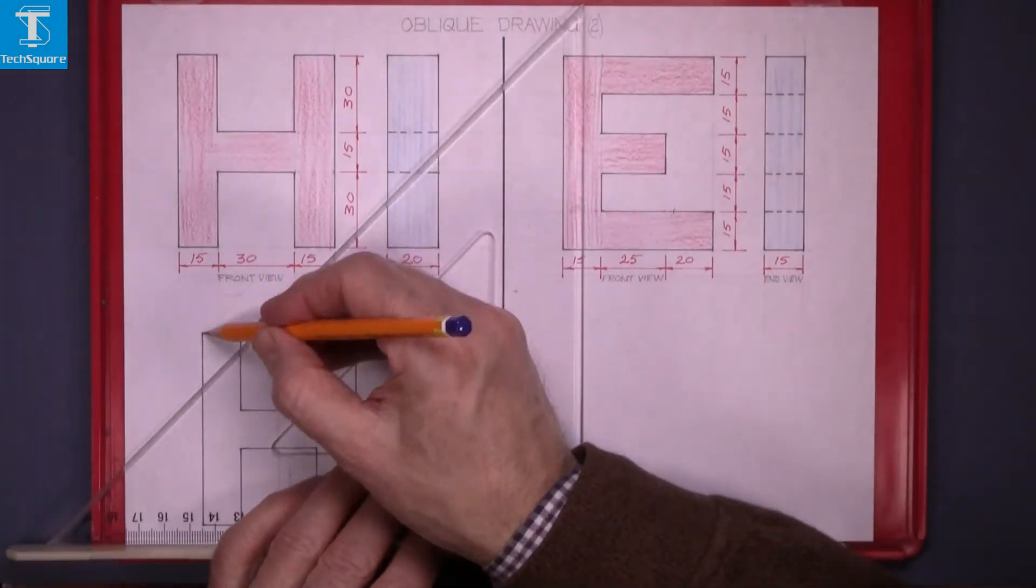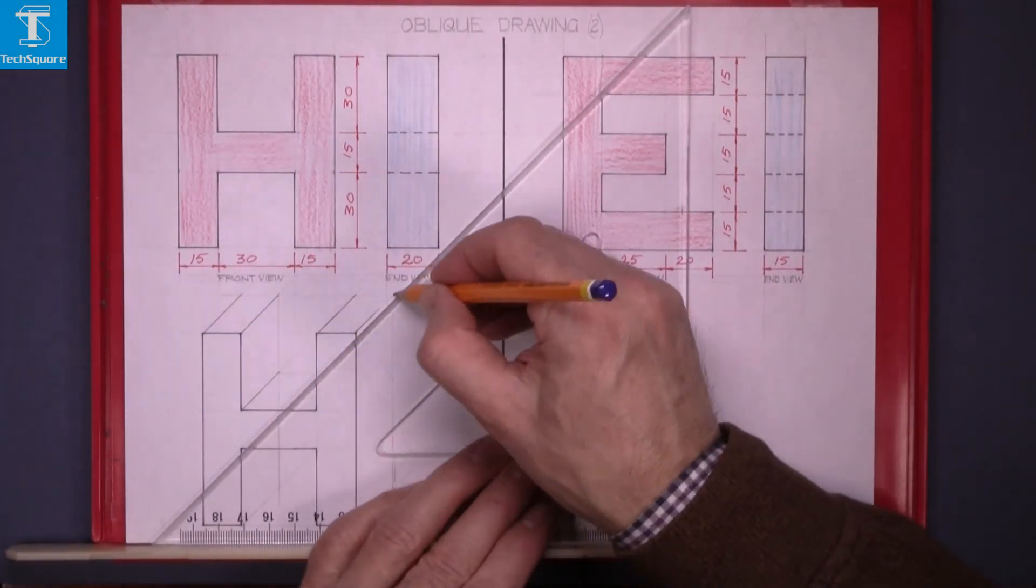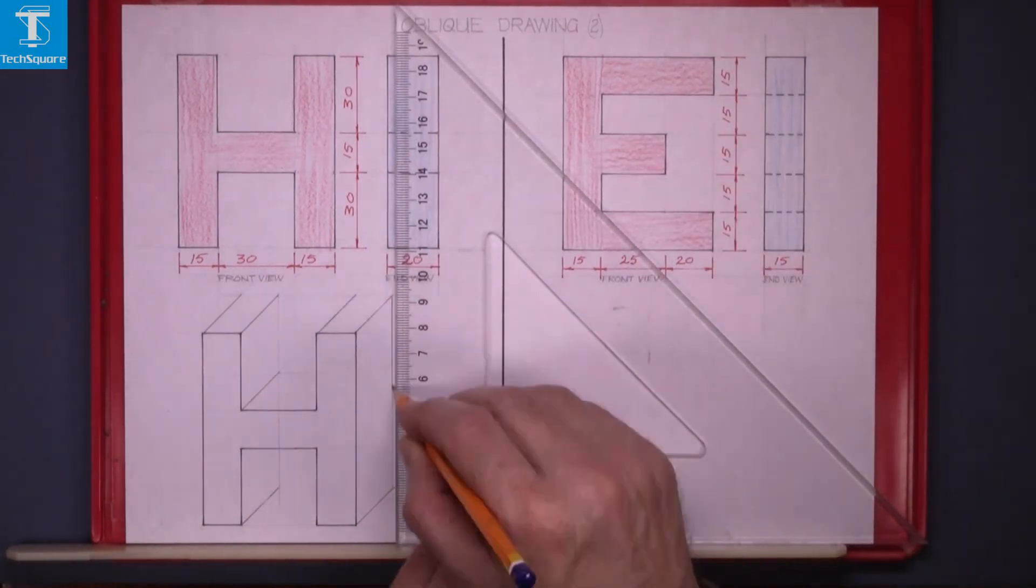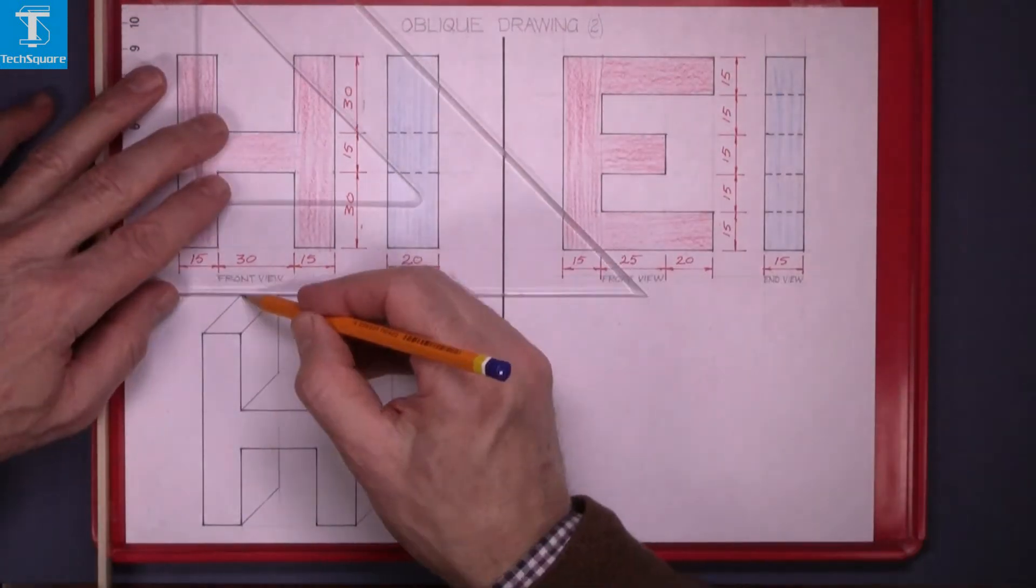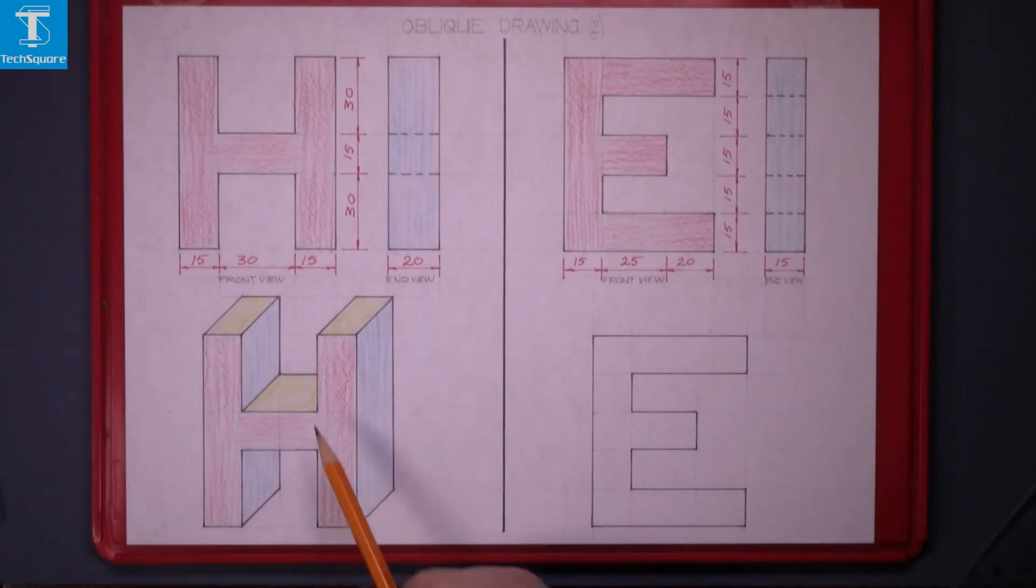Now line in those lines. And that's the oblique view of the letter H complete.